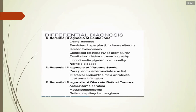The differential diagnoses for leukocoria include: Coats disease, persistent hyperplastic primary vitreous, ocular toxocariasis, cicatricial retinopathy of prematurity, familial exudative vitreoretinopathy, incontinentia pigmenti retinopathy, and low-risk disease. Masquerade syndromes causing vitreous seeding or discrete retinal tumors that can mislead diagnosis include: pars planitis, microbial endophthalmitis, leukemic infiltrates, astrocytoma of the retina, medulloepithelioma, and retinal capillary hemangioma.